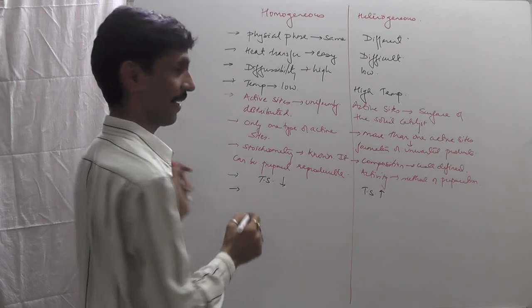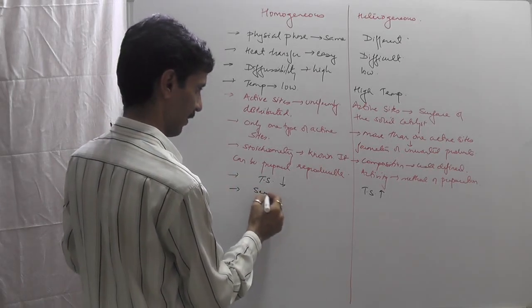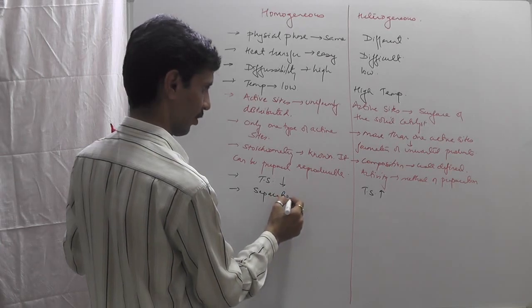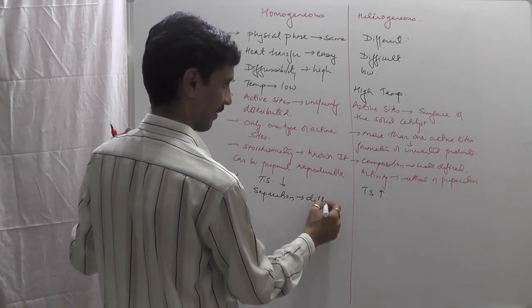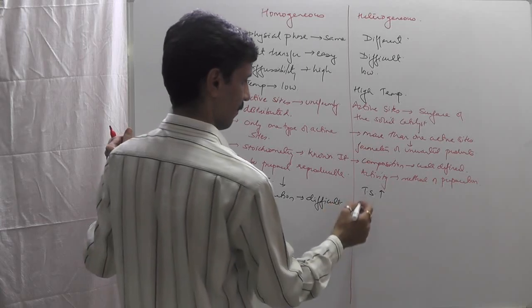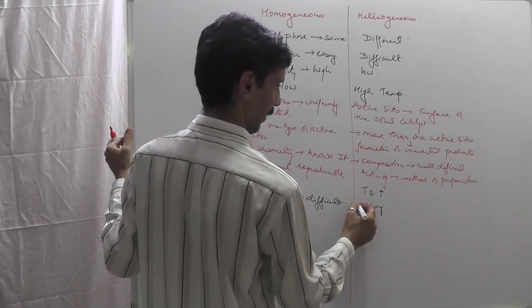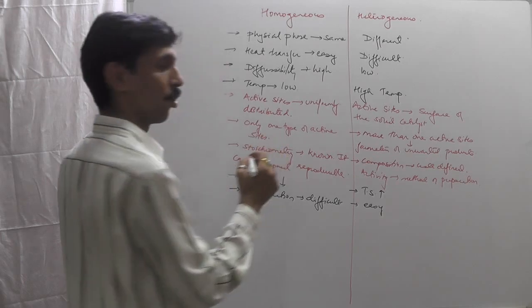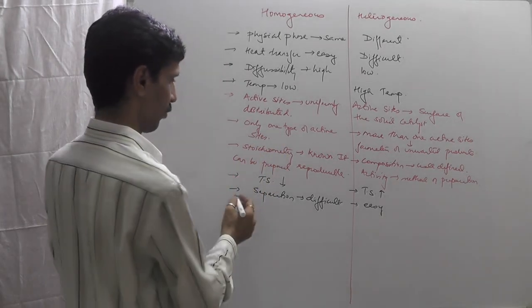The ninth point is about separation of the catalyst after the reaction. In homogeneous catalysis, because the reactants and catalyst are in the same phase, separation is difficult at the end of the reaction. In heterogeneous catalysis, separation is quite easy by comparison.